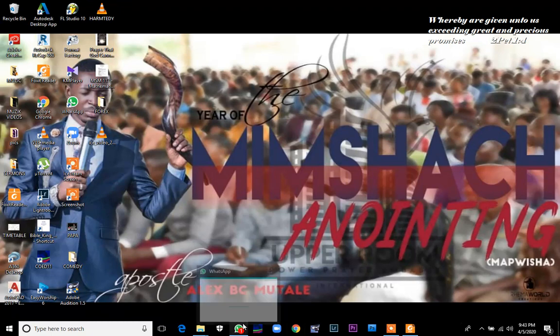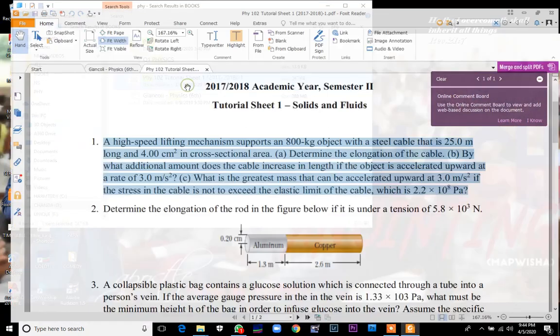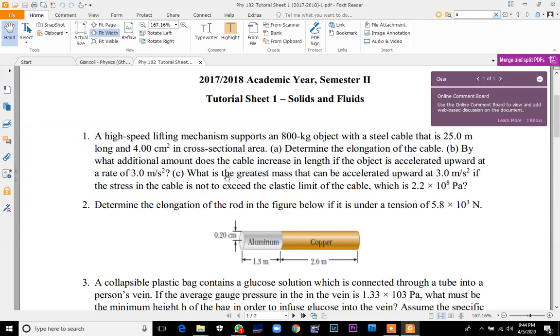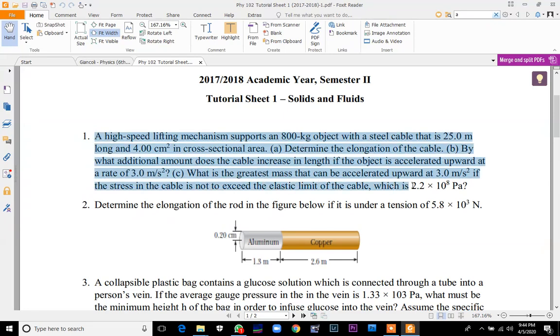The first thing that you need to know is to understand the question. Let's take for instance you have this tutorial sheet. If you want to find the solution for the first question here, what you should do is first read the question, understand it, know what they want. Then you copy the whole question, you highlight it like that, then after highlighting it you press copy.